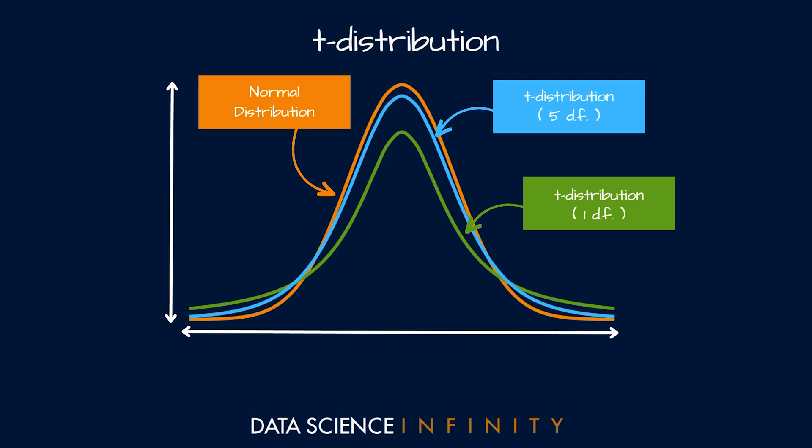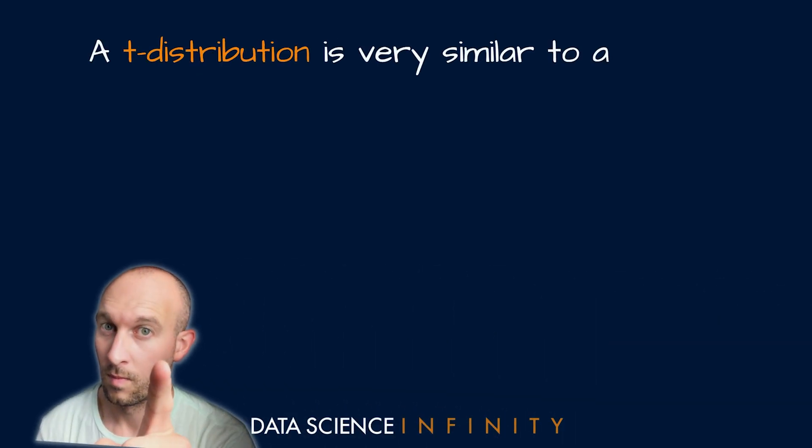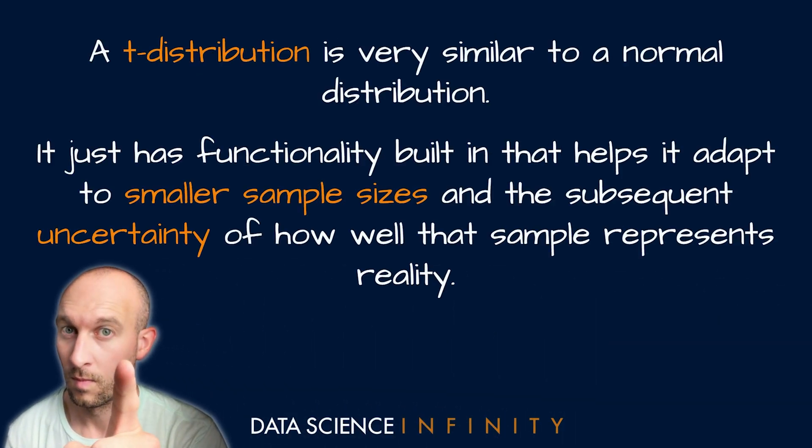As the sample size and thus the degrees of freedom gets larger—in other words we get our hands on a larger sample of data—the t-distribution tends more towards the normal distribution. This is because with a larger sample we're more certain around estimating the true population statistics. Conversely, when sample size is small the distribution becomes much flatter, essentially saying that it is less confident when representing the true population that it comes from. So the key takeaway here is that a t-distribution is very similar to a normal distribution. It just has functionality built in that helps it adapt to smaller sample sizes and the subsequent uncertainty of how well that sample represents reality.